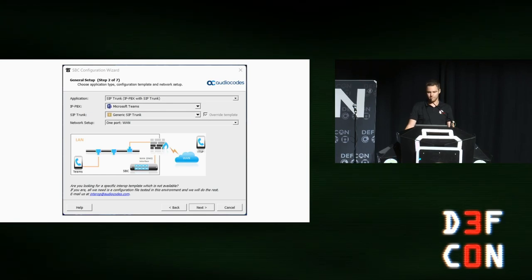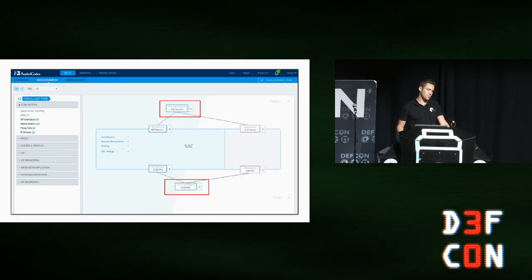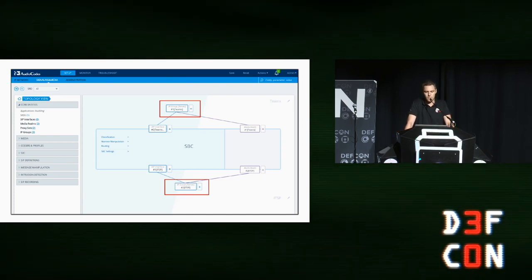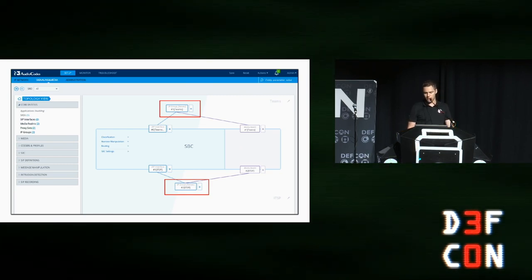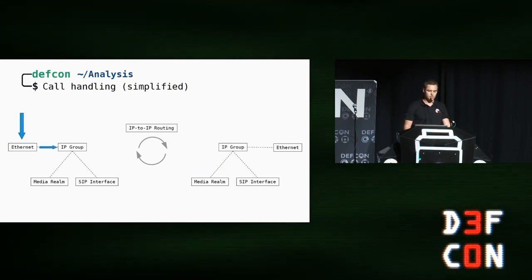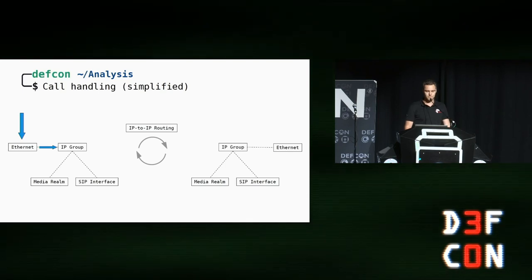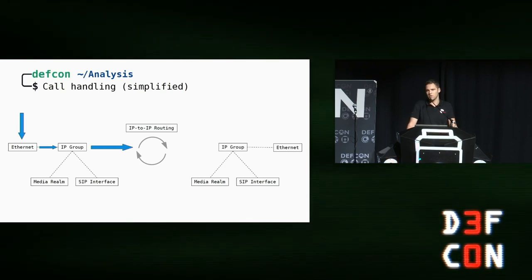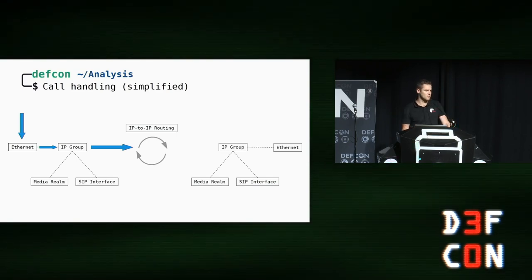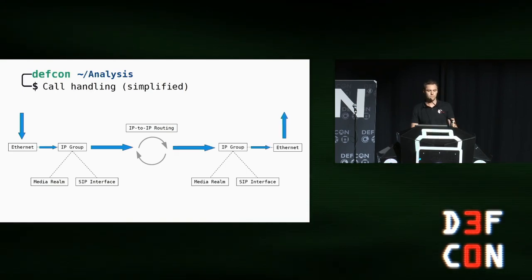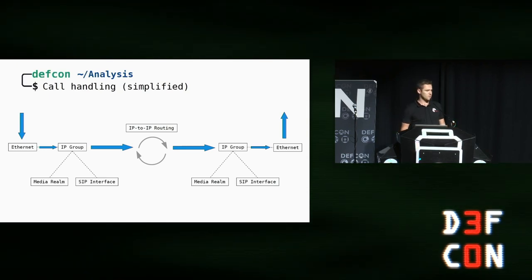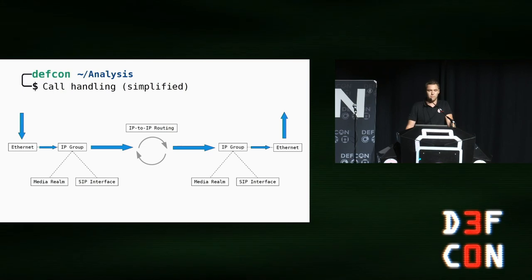Let's take a closer look at the applied configuration. Here we can see the topology overview of our applied configuration, including two sections, so-called IP groups. One for the Microsoft Teams direction and one for our telephone carrier. And if a call comes in, it goes roughly this way, from an Ethernet interface to the applied IP group, which includes a media handler and a SIP interface, and then to the routing engine named IP to IP routing. Based on the configured rules inside this routing engine, it goes likely the same way out to the destination SIP service.